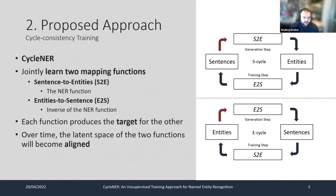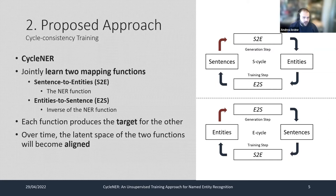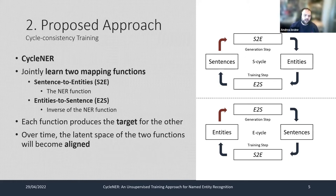Cycle consistency training is a strategy for jointly learning two mapping functions, each of which is the inverse function of the other, using two non-parallel sets of training data. In our case, the first function is the sentence-to-entities function, which acts as our NER function. We also introduce the inverse function, entities-to-sentence, or E2S, which given a set of entities as input, outputs a natural language sentence containing those entities. Training is divided into two cycles — the S-cycle and E-cycle — repeated iteratively until the two functions become aligned.